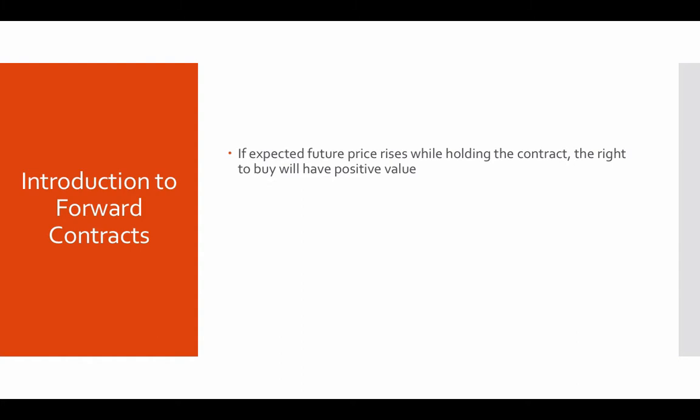If the expected future price rises while holding the contract, the right to buy will have a positive value. Forwards do not come with price points attached. Instead, if while holding the contract you see that the expected future price is going up, then the right to buy is going to have a positive value because you can buy at a lower price. And the right to sell would actually have the equivalent negative value because then you'd have to sell at a lower price.